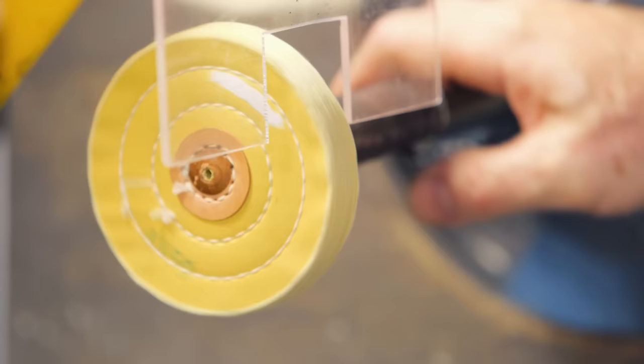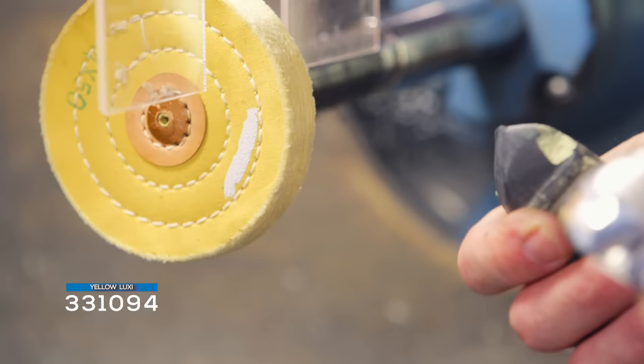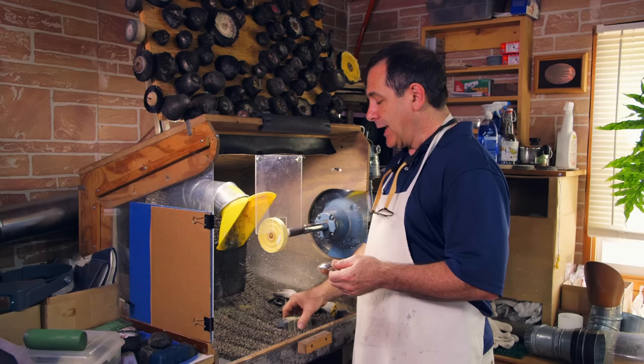I'm going to be using the yellow Luxi compound which is a medium abrasive and I'm using this because I'm down to 2000 grit. I could also use it if I were coming over here from a 1200 grit. But if I was down to 360 or 600, then I would have to be using a more aggressive polishing compound.